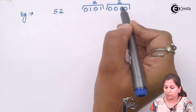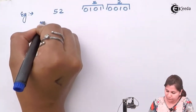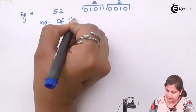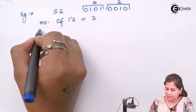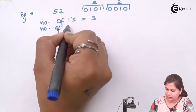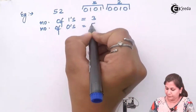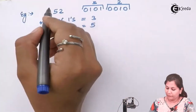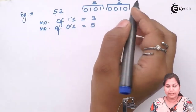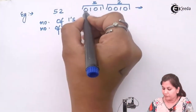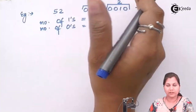When we count the number of 1s in 0101 0010, they come out to be 1, 2, and 3. The number of 0s comes out to be 1, 2, 3, 4, 5. Now every number consists of 8 bits — we have 1, 2, 3, 4, 5, 6, 7, 8 bits.